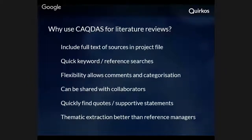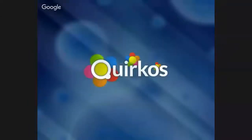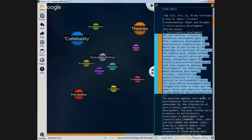CAQDAS software can be a lot better at allowing you access to the full text, but it also allows much more nuanced thematic extraction. You can tag particular quotes rather than just the whole reference or article — you can tag specific sections which are relevant to you, so you can cut across all of your literature and pull out just the things that are interesting to you. With that rationale in mind, I'm going to show you how this works in practice using Quirkos, though much of this fundamental stuff will work for whatever piece of qualitative analysis software you're using.